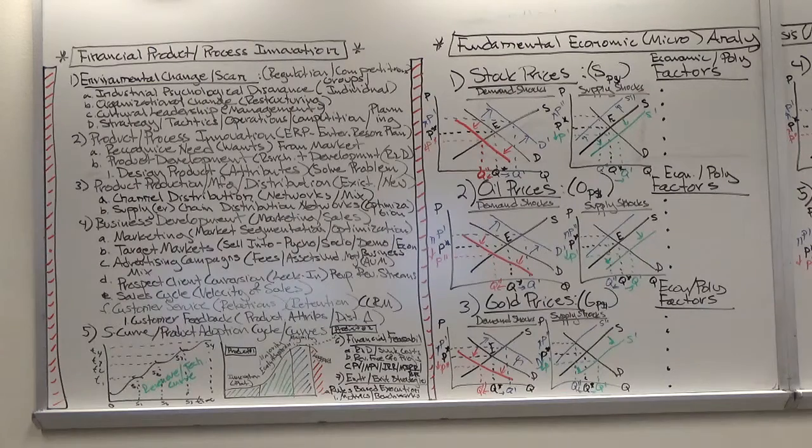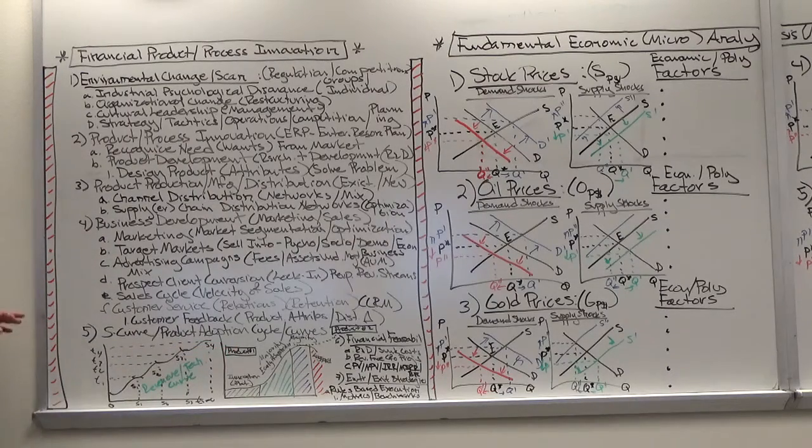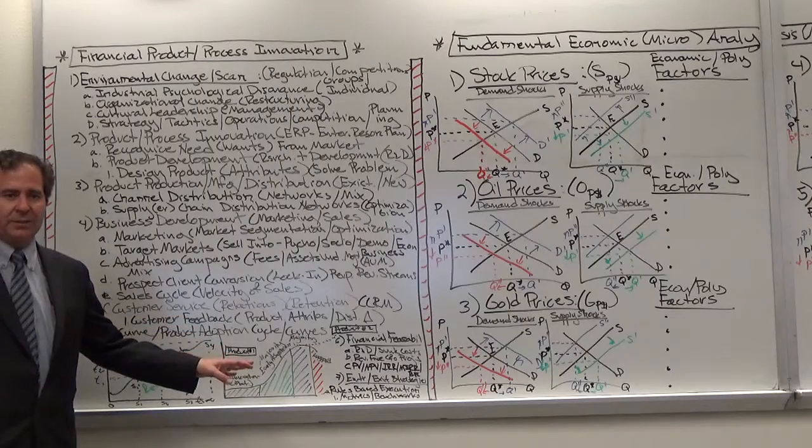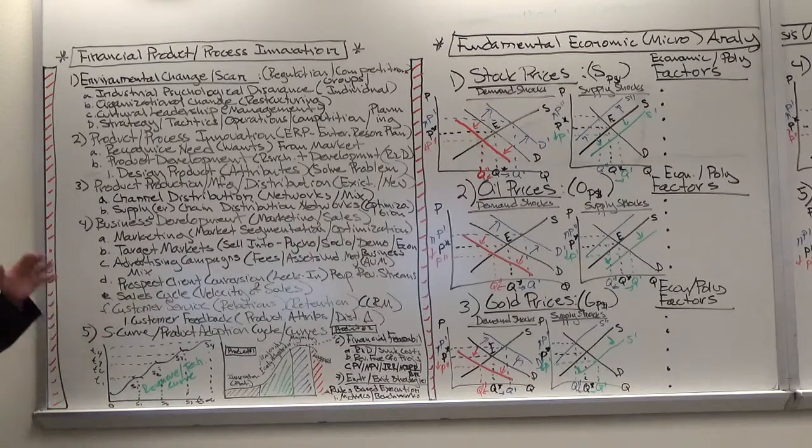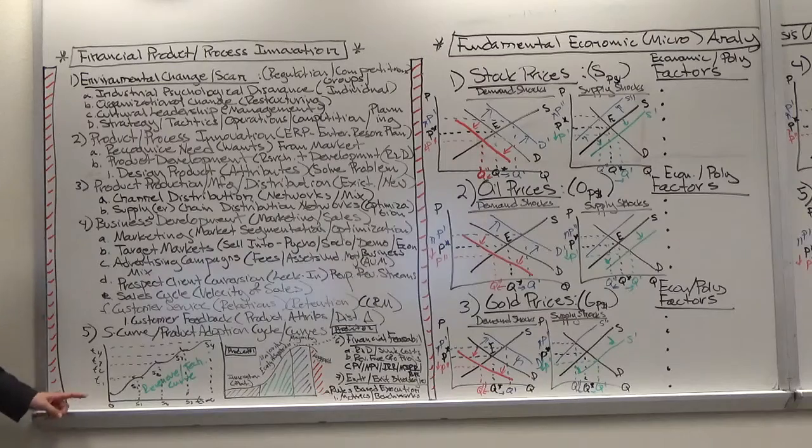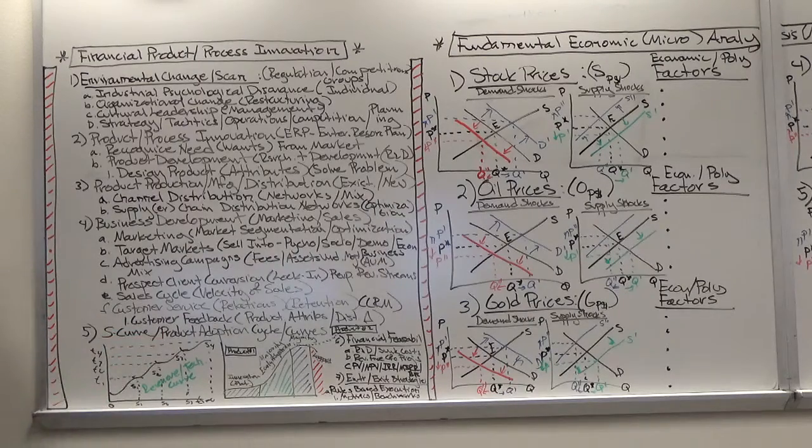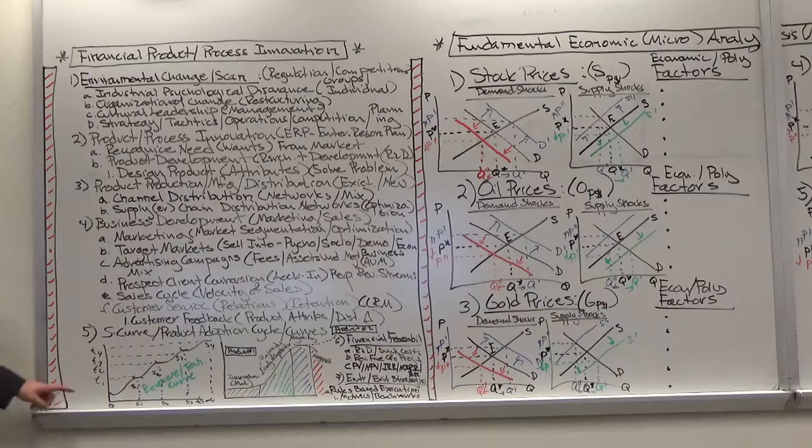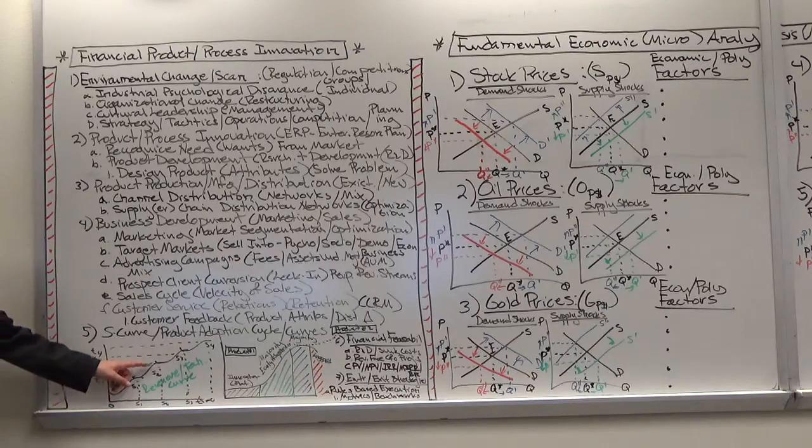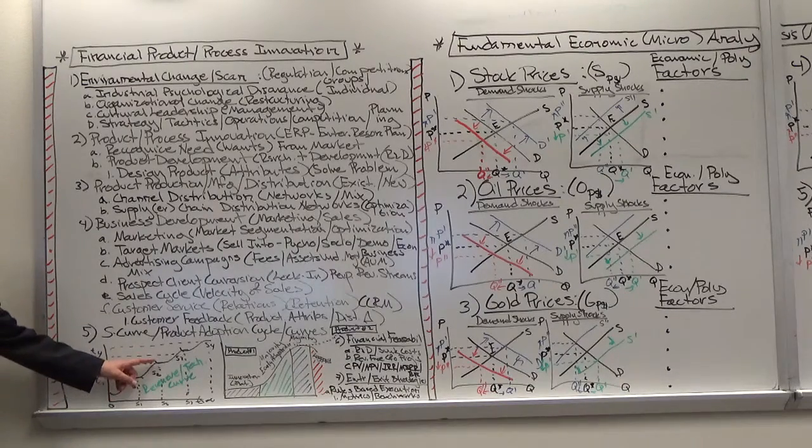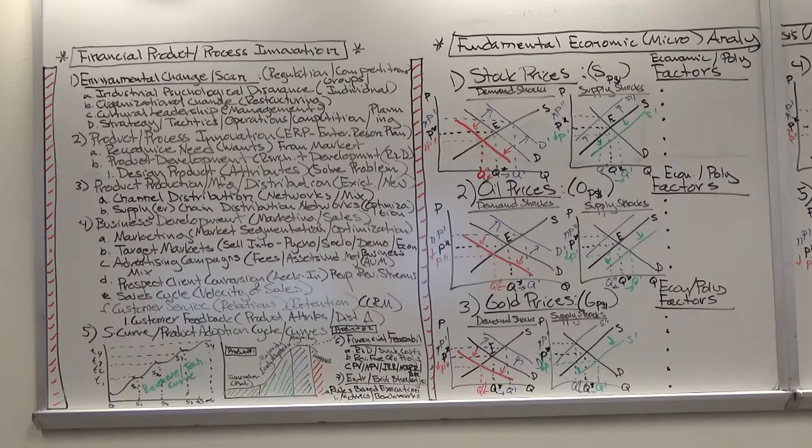So the models, the two models that are applicable to this theory is the S-curve and the product adoption cycle. Now the S-curve is the technology, the product adoption cycle is the product. We'll do the technology curve first. In technology or financial services technology or fintech or whatever you want to call it, you usually have a series of what are called S-curves. And these S-curves are basically technologies that are introduced over time and they have an S-curve life cycle. They will basically be initiated, they will be adopted, and then they will degrade. You then introduce another product, it will go through the cycle again. You introduce the third and then the fourth technology or process.